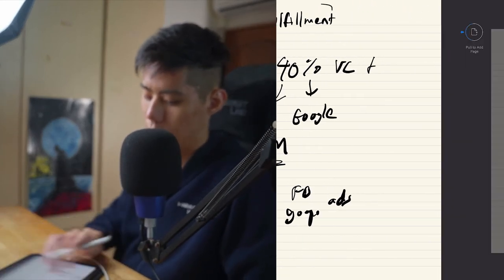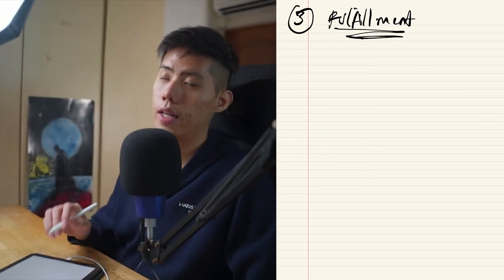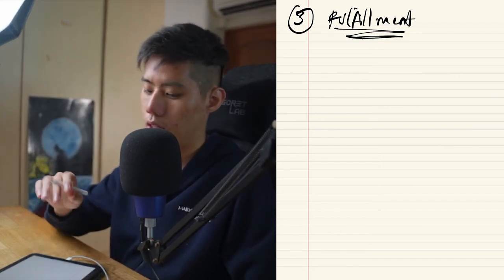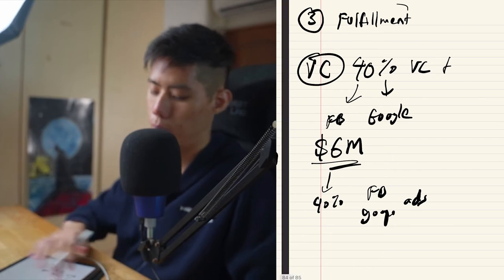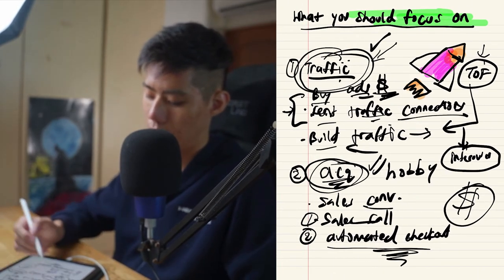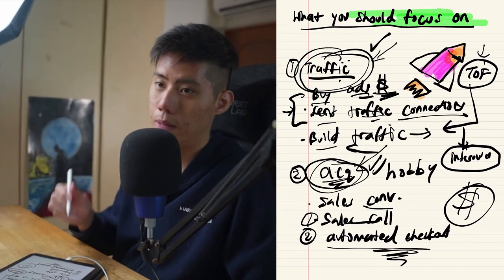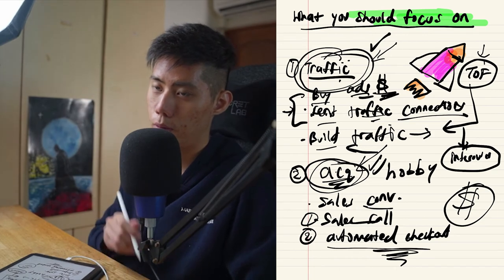So number three, I've spilled the secrets already, but number three is fulfillment. Let me explain to you why this is number three. As a beginner entrepreneur, people think, how do I do this? How do I fulfill the product? So for example, if you sold something and then you're like, oh shit, I can't fulfill it, it actually doesn't matter because you're going to figure it out. You're going to figure it out and the reason why people cannot get the business up and running is because they never get this part up and running. They don't bring in money fast enough for it to be a viable business.